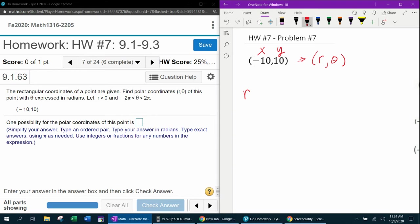So the formula to calculate the radius is the square root of x squared plus y squared. Plugging into that formula is going to give us negative 10 squared plus 10 squared, which is 100 plus 100, which is 200. And that will simplify to 10 square root of two.